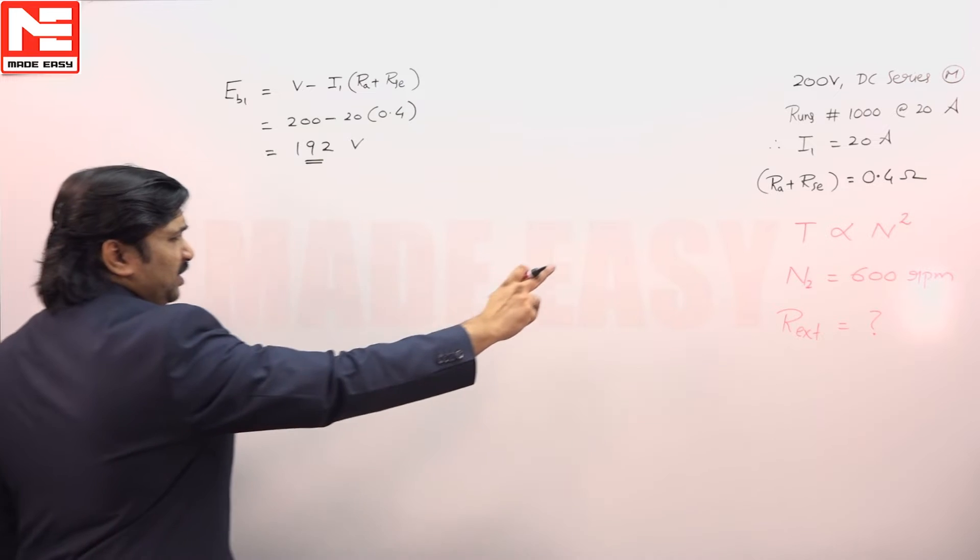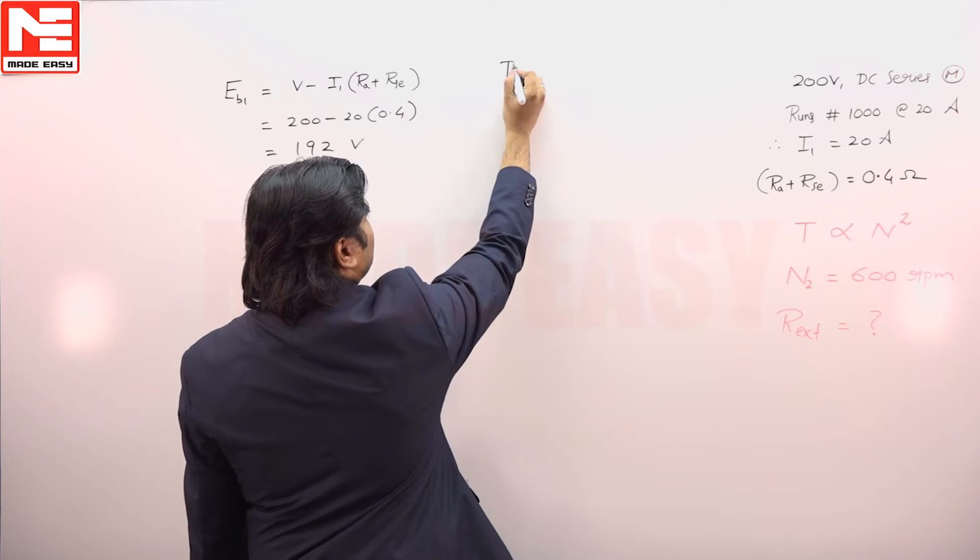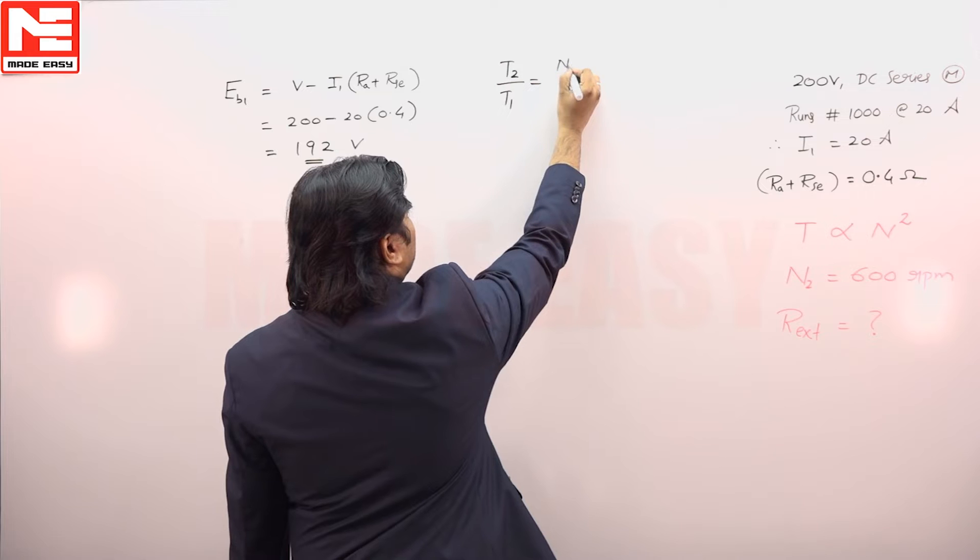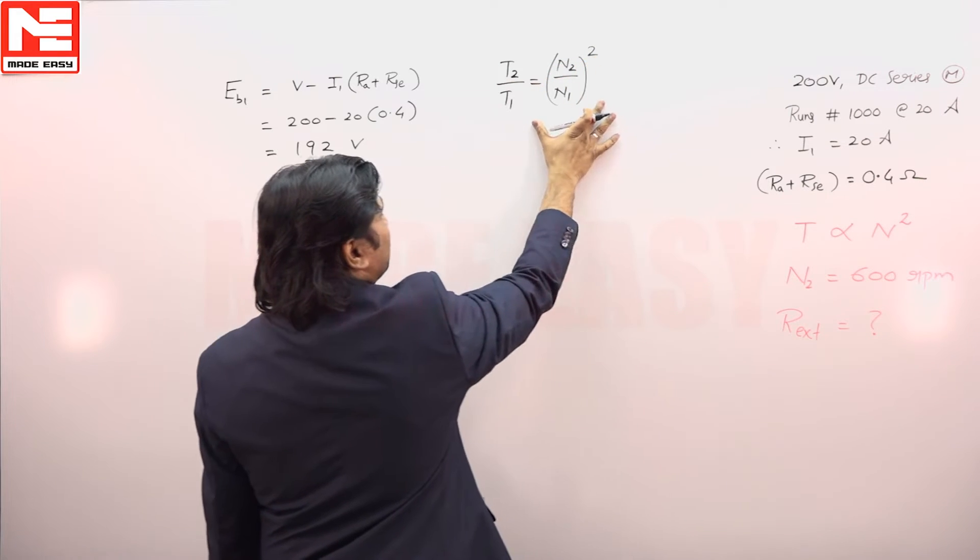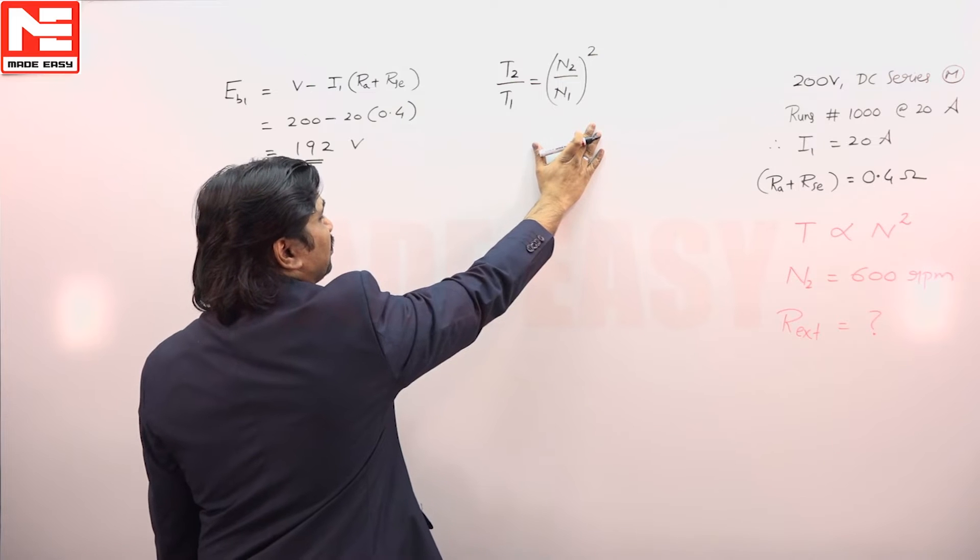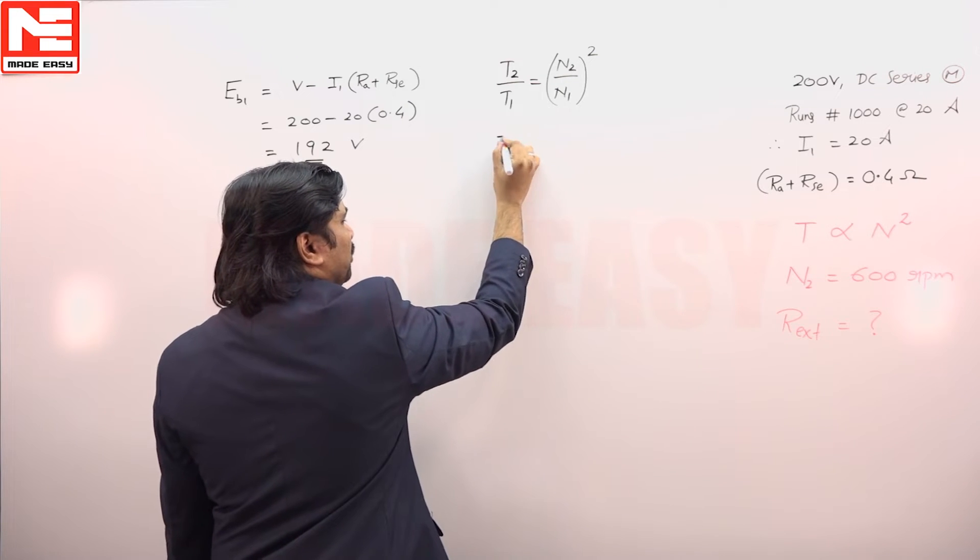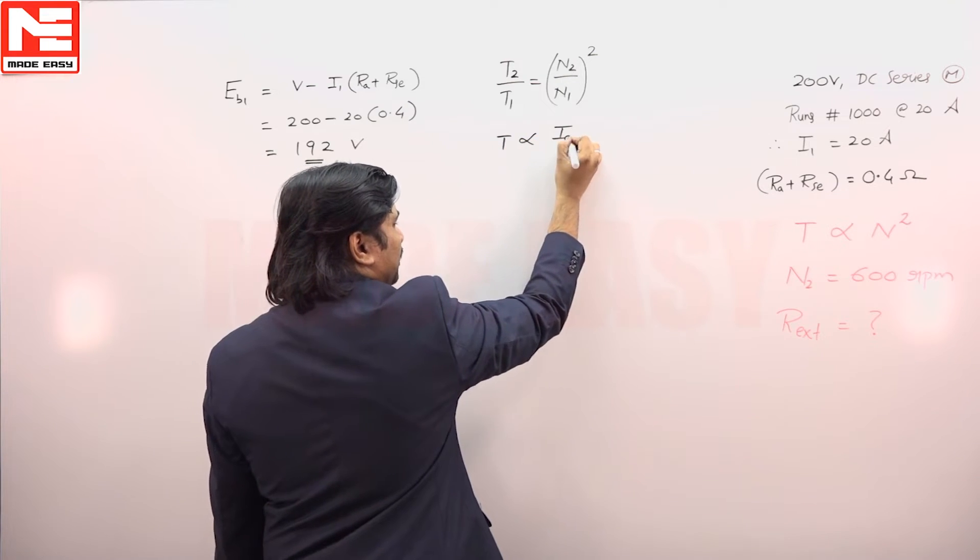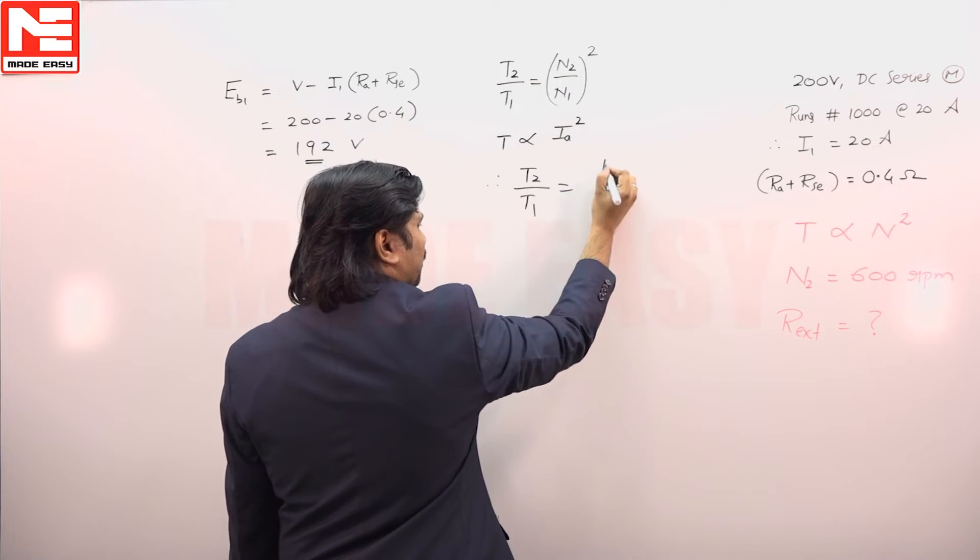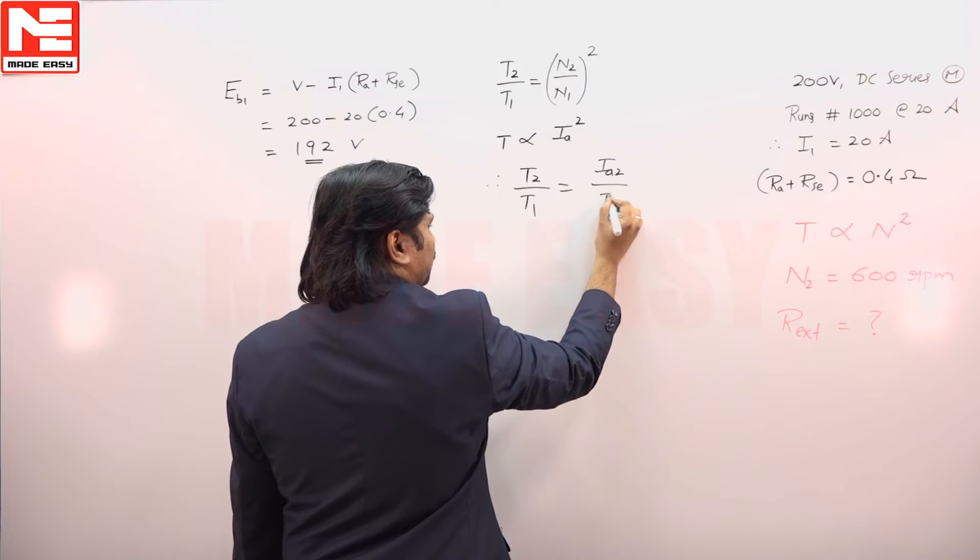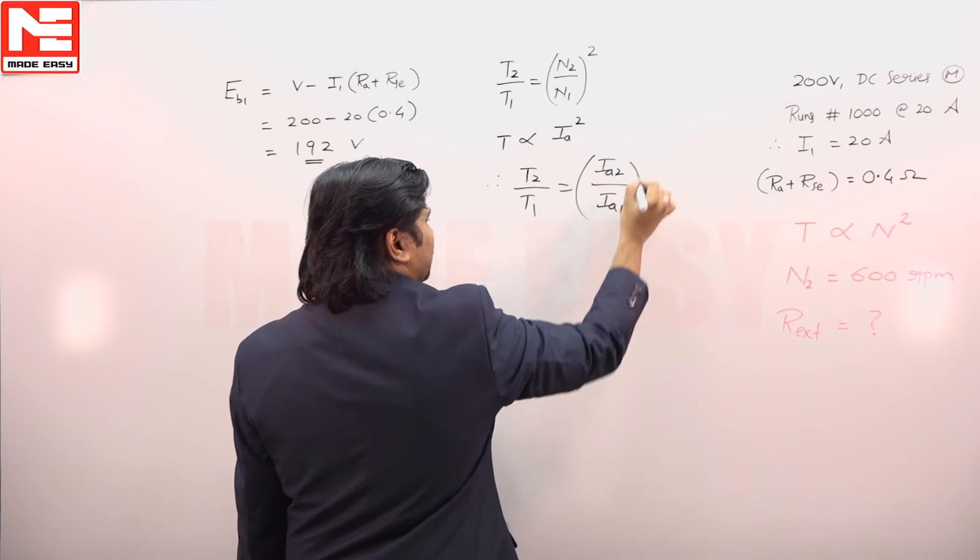It was given T proportional to N square, T2 by T1 is equal to N2 by N1 square. This was given in the question, that is the condition it was asked to assume. And naturally in a series motor T proportional to Ia square, so T2 by T1 is equal to Ia2 by Ia1 square.